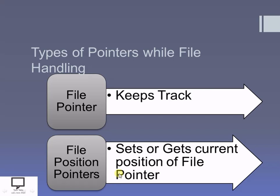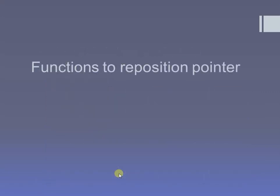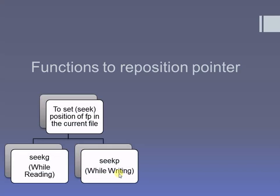So which are those functions and what is their functionality? These are the functions used for the repositioning of the file pointer. If I want to set the position of the file pointer — that is, to seek the position — to perform operations like reading or writing, the functions used are seekg and seekp. seekg is used to set the position of the file pointer for the get operation — that is, input, which means reading.